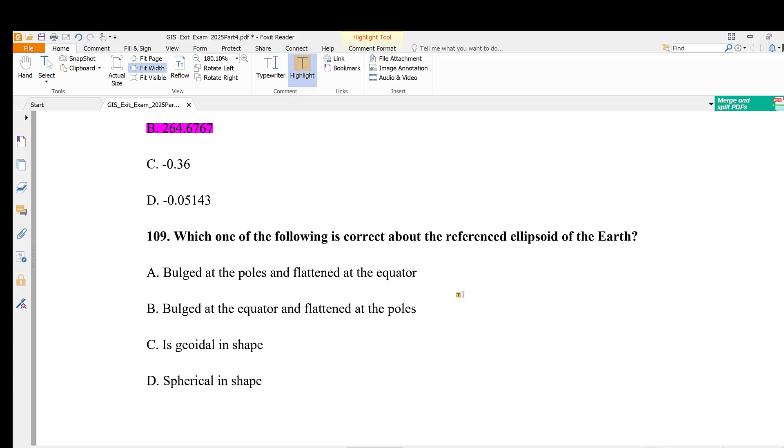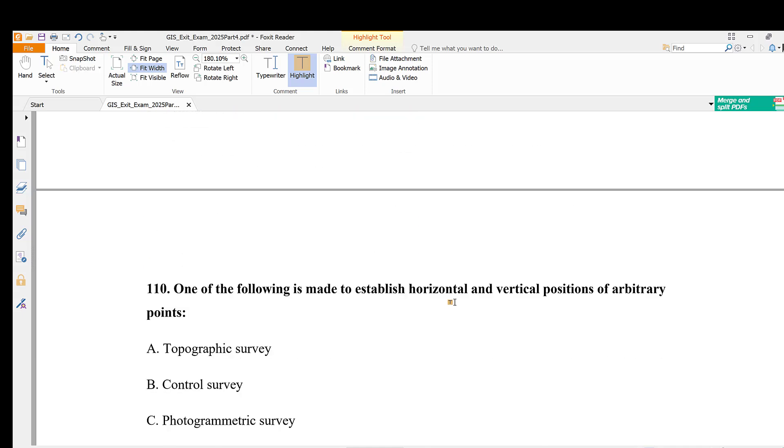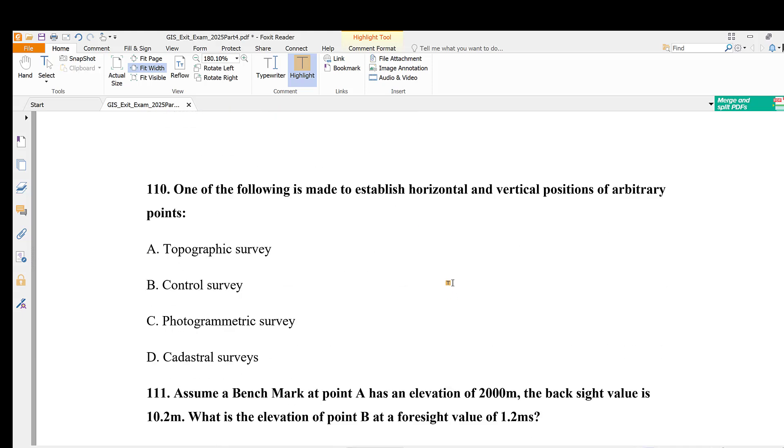Question 109: Which of the following is correct about the reference ellipsoid of Earth? A: Bulged at the poles and flattened at equator, B: Bulged at equator and flattened at the poles, C: Geoidal in shape, D: Spherical in shape. The answer is bulged at equator and flattened at the poles.